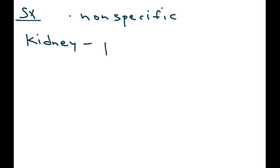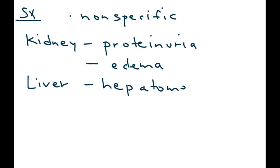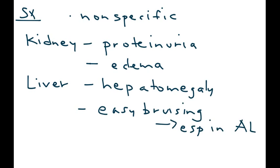I'll present these based on organ. If the kidney is affected, you're going to have a patient who presents with proteinuria and edema. If the liver is affected, the patient can present with, of course, hepatomegaly. And easy bruising is a telltale sign, especially the type of amyloidosis known as AL, also known as primary amyloidosis.